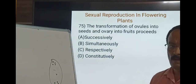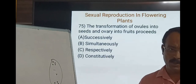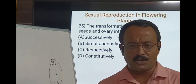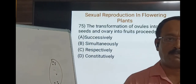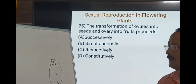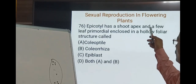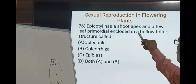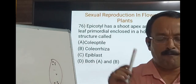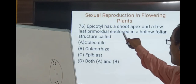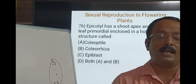The transformation of ovules into seeds and ovary into fruit proceeds simultaneously after double fertilization and triple fusion. Regarding monocot embryo structure, the epicotyl has a shoot apex and a few leaf primordia enclosed in a hollow leaf-like structure. In monocot embryos, the epicotyl's leaf primordia are enclosed in an envelope — a thin membranous cover called the coleoptile, as discussed in question 65. Similarly, the radicle consists of a root cap covered by a thin membrane called the coleorhiza. So the answer is coleoptile.